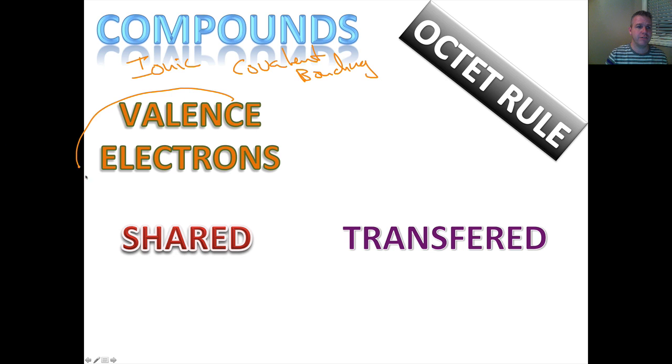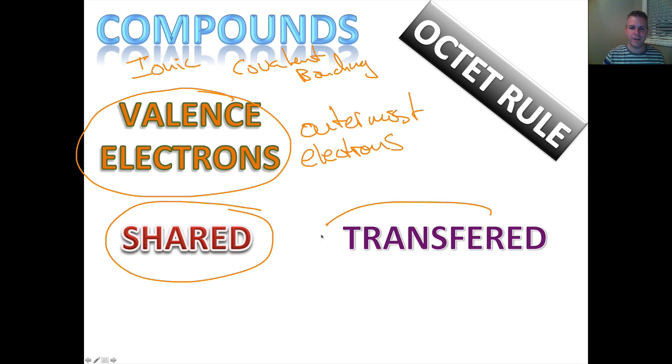Compounds are formed when two elements get together to share electrons to become more stable. Valence electrons, again just to review, these are the outermost electrons, the electrons in the outermost shell. And this has to do with compounds. Electrons can either be shared or they can be transferred. This is molecular and this is ionic. We'll touch on this in our next video.